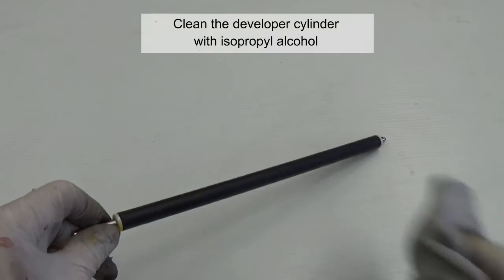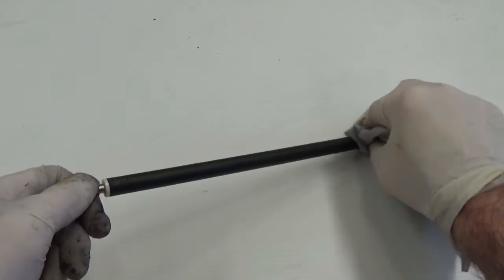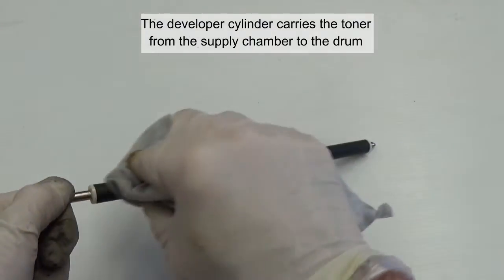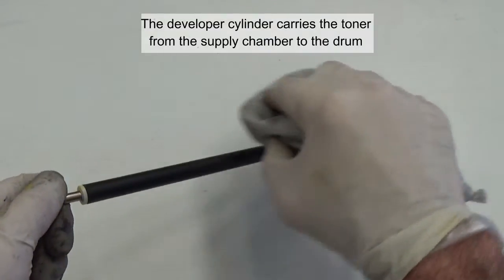Clean the developer cylinder with isopropyl alcohol. The developer cylinder carries the toner from the supply chamber to the drum.